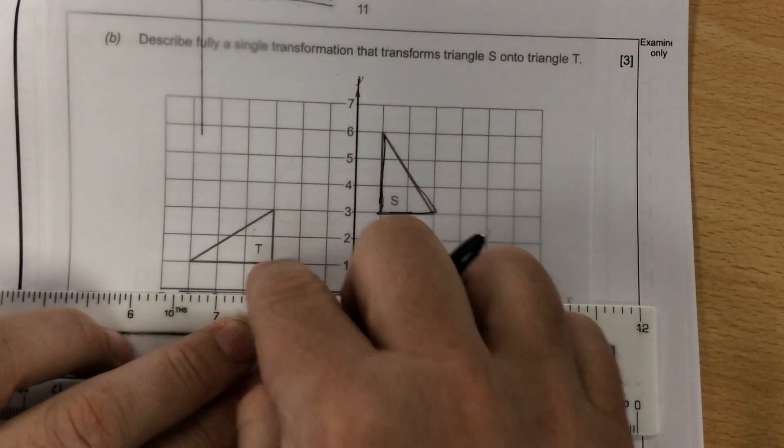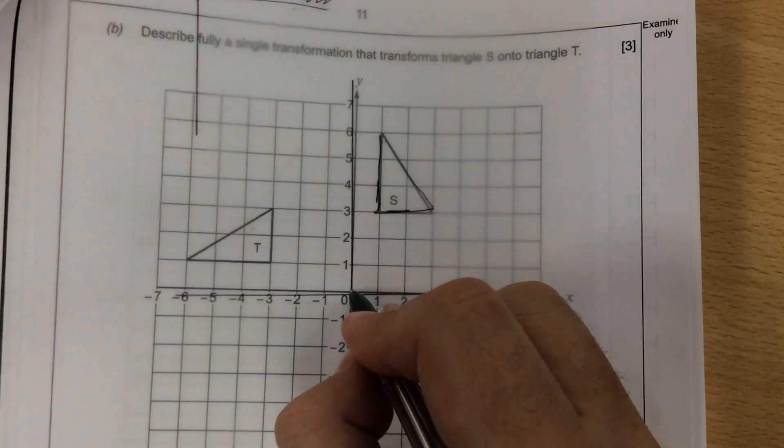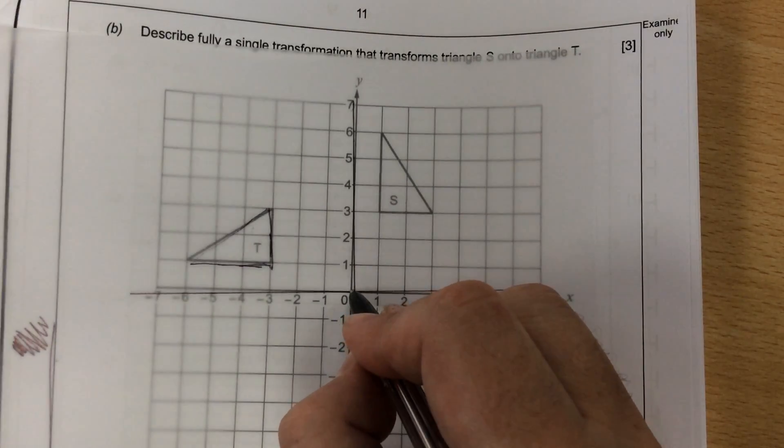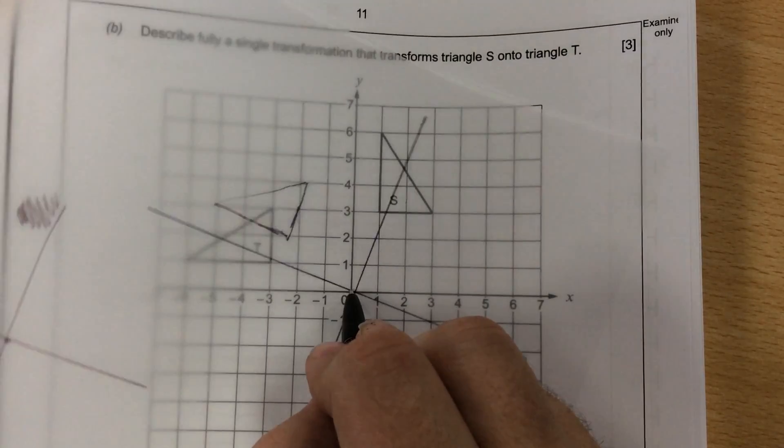It's been rotated this way, anti-clockwise. That would be a quarter of a turn from zero, so it's rotated about the origin, a quarter of a turn,